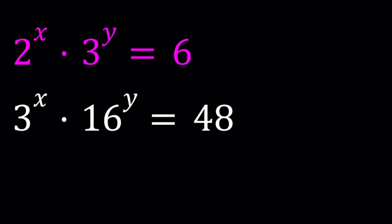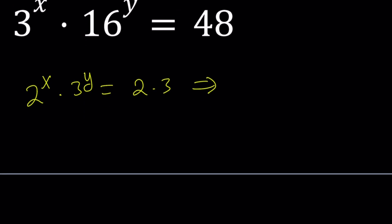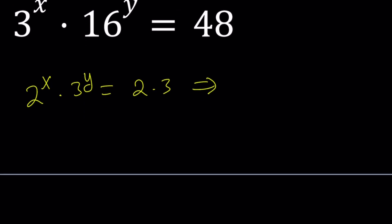Okay, so we have this expression 2^x times 3^y equals 6 and 3^x times 16^y equals 48. So I'm going to take the first equation and write it as 2^x times 3^y equals 2 times 3. And then I'm kind of putting together the powers of 2 and powers of 3 together. So divide by 2 here on the left and divide by 3^y on the right. That gives me 2^(x-1) equals 3^(1-y). If this didn't make sense to you, this is basically what I did.